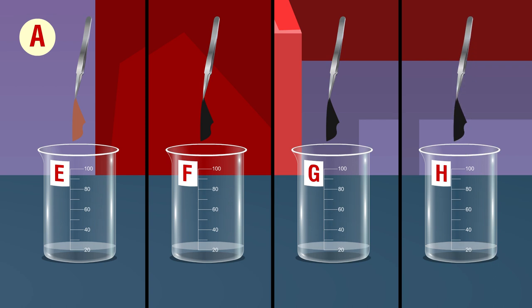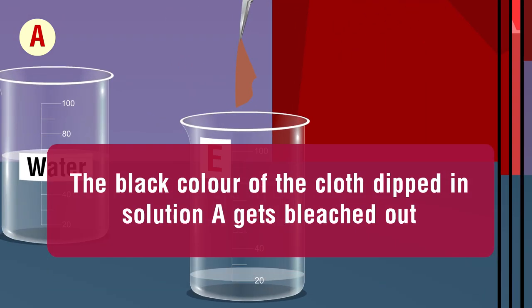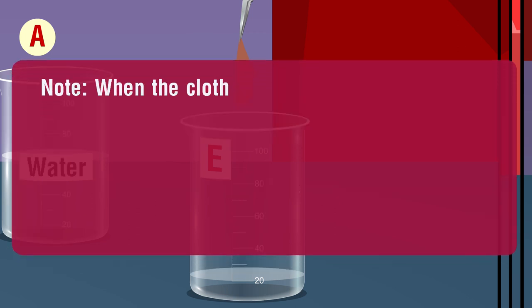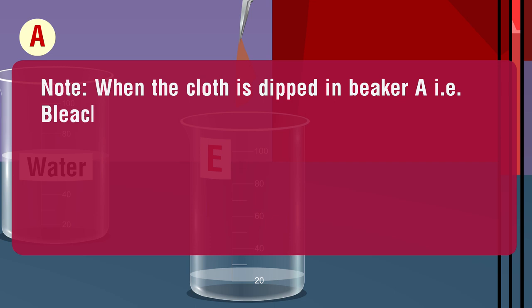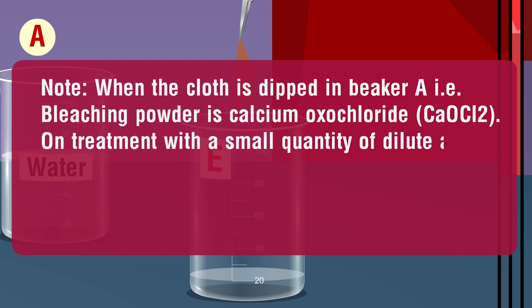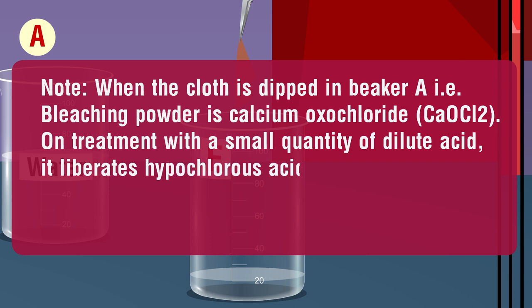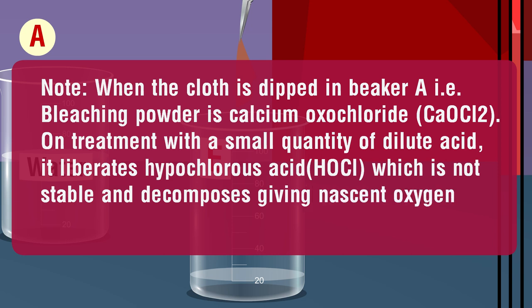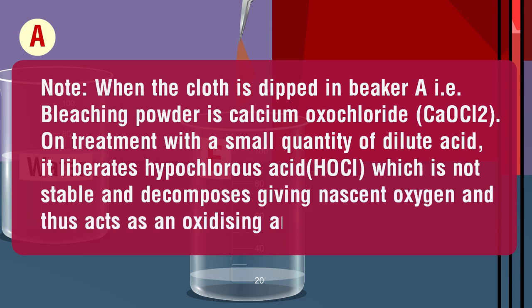The black color of the cloth dipped in solution A gets discolored — the black color gets faded and bleached out. Thus, compound A is the bleaching powder. Bleaching powder is calcium oxochloride (CaOCl2). On treatment with a small quantity of dilute acid, it liberates hypochlorous acid (HOCl), which is not stable and decomposes giving nascent oxygen, thus acting as an oxidizing and bleaching agent.